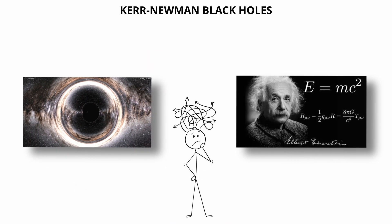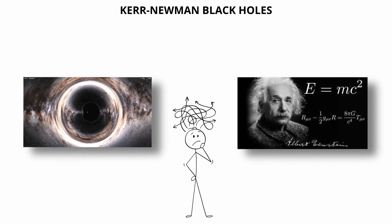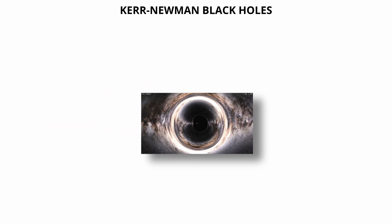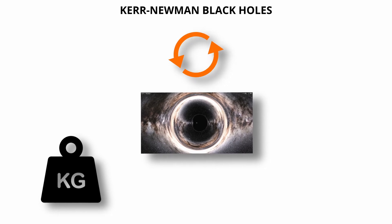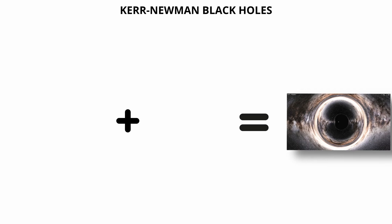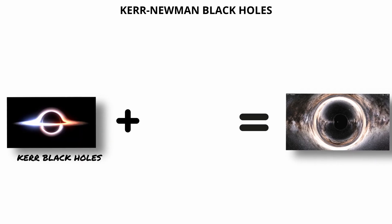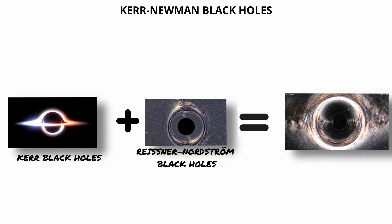Kerr-Newman black holes. Kerr-Newman black holes are the most complex type of black hole allowed by general relativity. They possess all three possible physical properties: mass, angular momentum (spin), and electric charge. These black holes combine the rotational characteristics of Kerr black holes with the electromagnetic properties of Reissner-Nordstrom black holes.